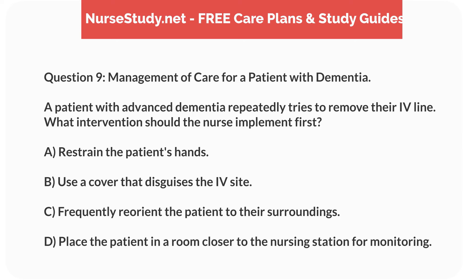Question 9. Management of Care for a Patient with Dementia. A patient with advanced dementia repeatedly tries to remove their IV line. What intervention should the nurse implement first? A. Restrain the patient's hands. B. Use a cover that disguises the IV site. C. Frequently reorient the patient to their surroundings. D. Place the patient in a room closer to the nursing station for monitoring.